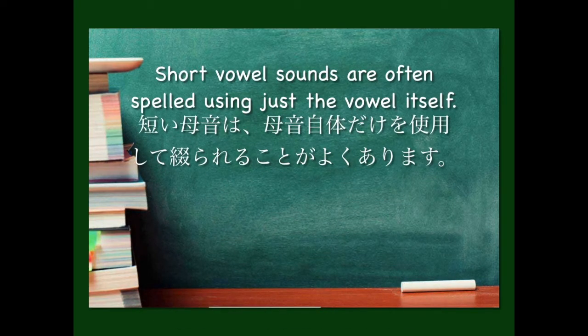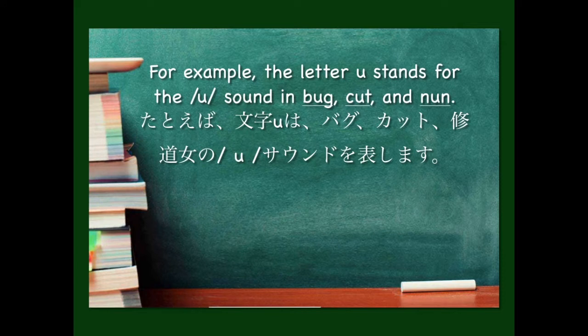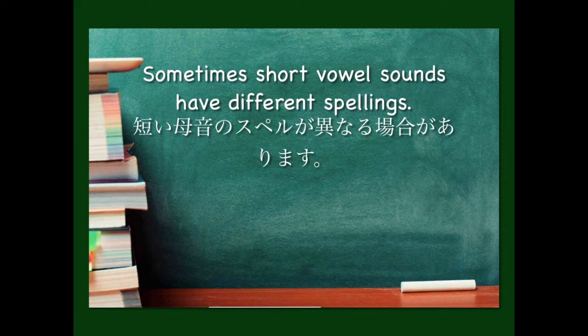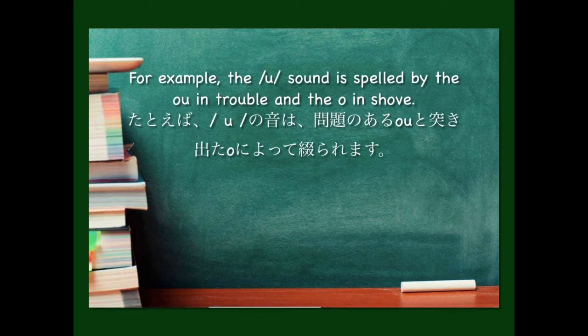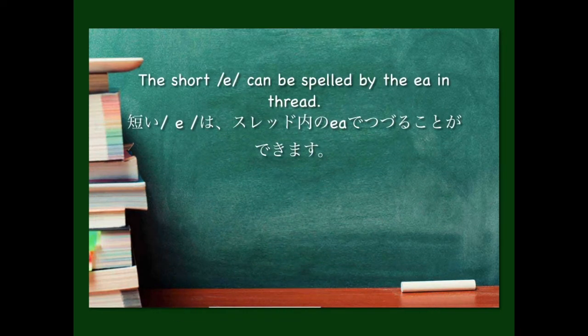Short vowel sounds are often spelled using just the vowel itself. For example, the letter U stands for the 'up' sound in bug, cut, and nun. The letter I stands for the 'I' sound in big, kick, and lid. Sometimes short vowel sounds have different spellings. For example, the 'up' sound is spelled by the OU in trouble and the O in shove. The short E can be spelled by the EA in thread.